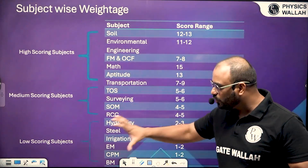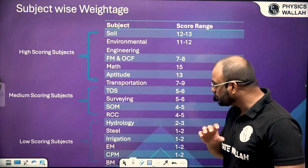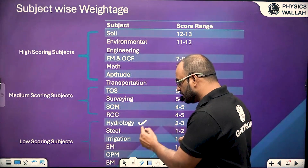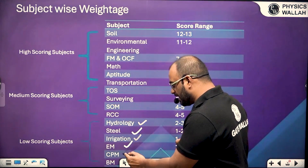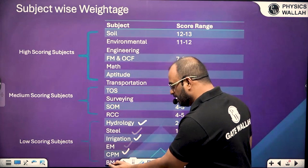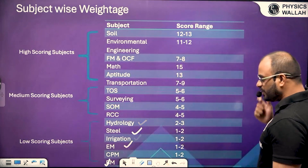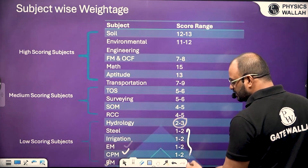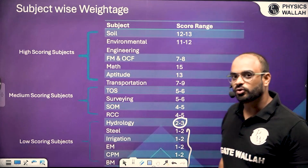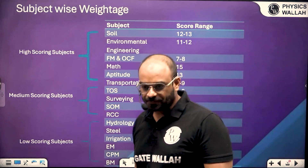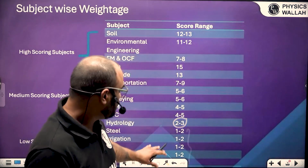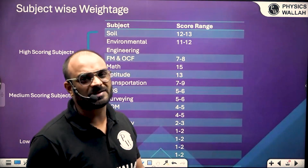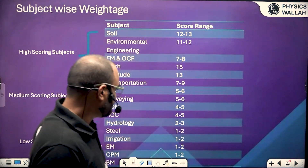In the low scoring subject category, we have hydrology, steel structure, irrigation, engineering mechanics, CPM, and building material. The weightage of hydrology is 2 to 3 marks and the rest of the subjects have a weightage of 1 to 2 marks only. Taking the summation, it is 10 to 12 marks for these subjects.